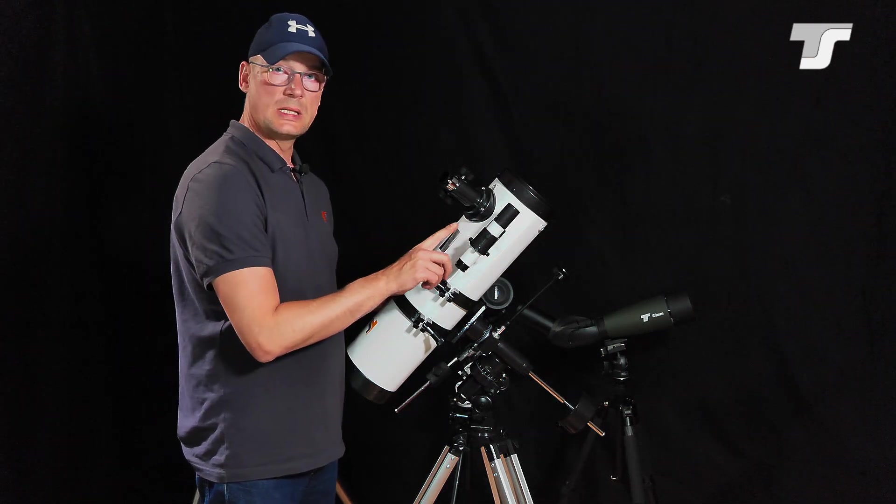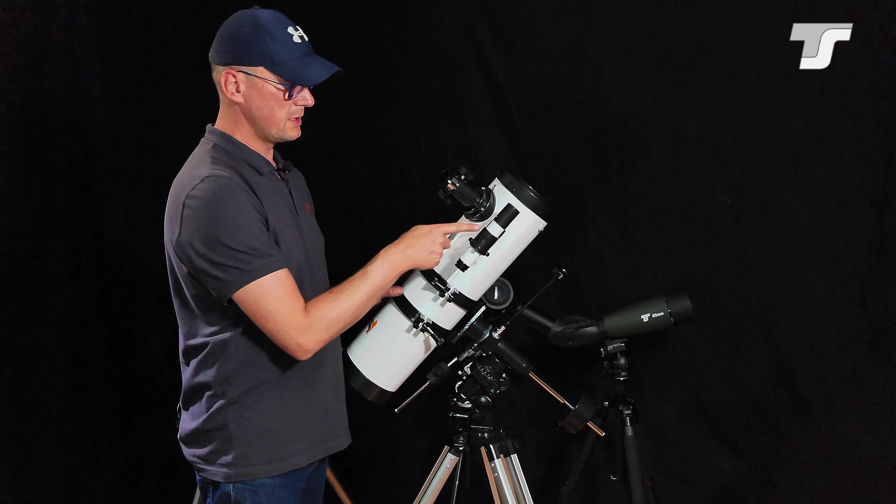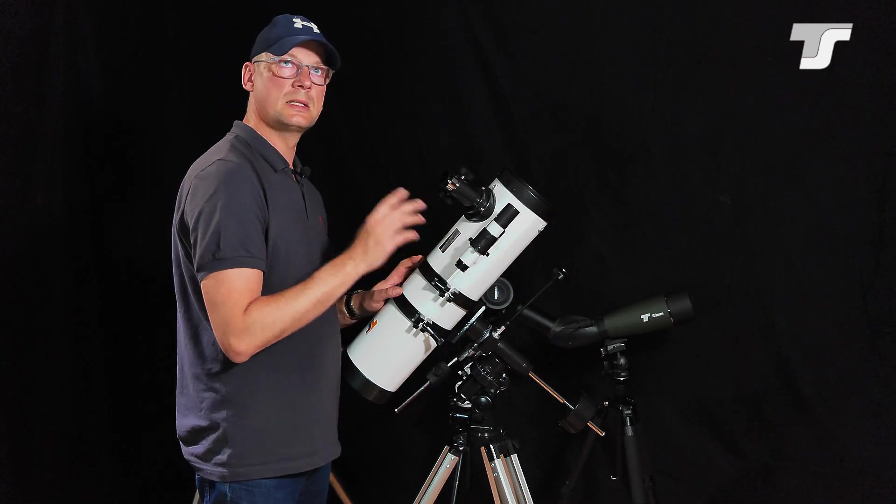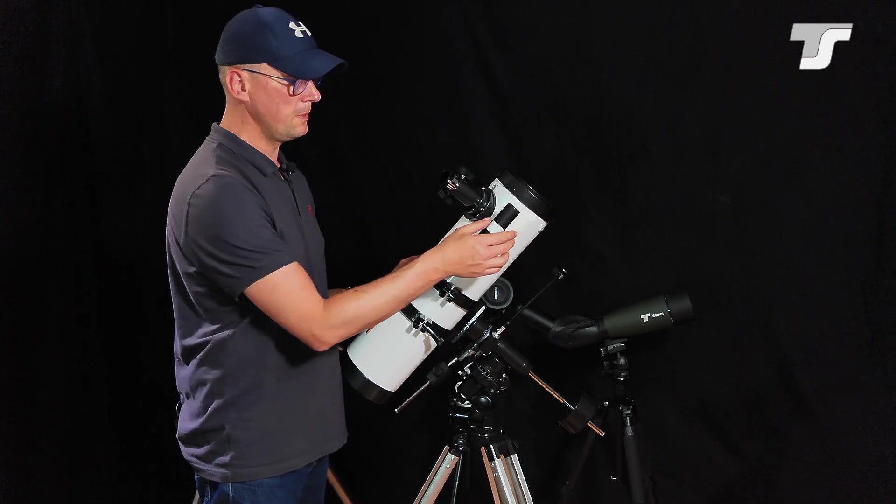The next accessory is the finder scope. You get a screw-on finder scope with the telescope, a 6x30. So six times magnification, 30 millimeter lens diameter with a crosshair in it.